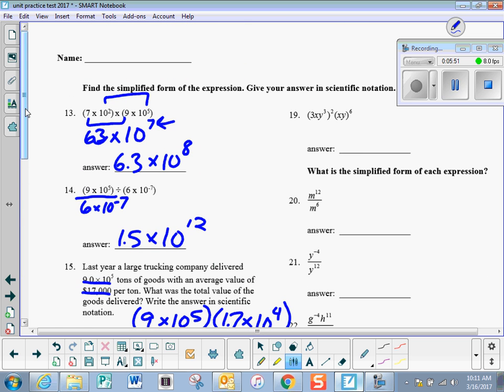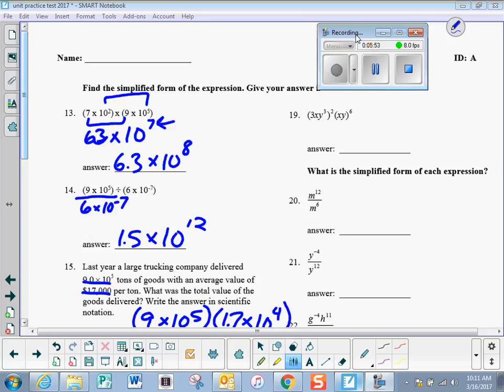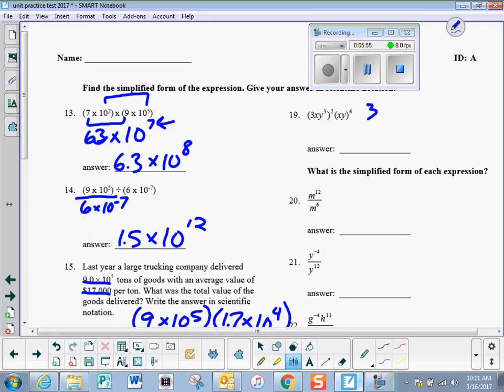Number 19, we need to simplify in parentheses first. So we get 3 squared, x squared, y to the 6th, times x to the 6th, y to the 6th. When I simplify that, I get 9, x to the 8th, when I add those exponents, y to the 12th.